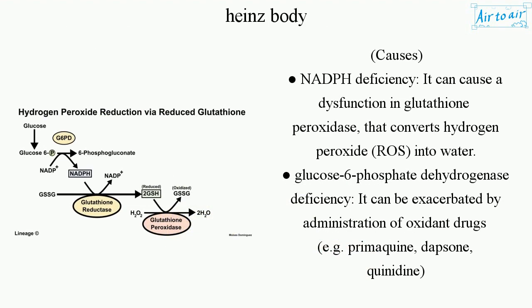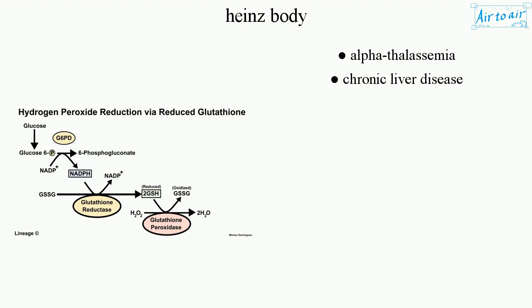Causes: NADPH deficiency — it can cause a dysfunction in glutathione peroxidase that converts hydrogen peroxide (ROS) into water. Glucose-6-phosphate dehydrogenase (G6PD) deficiency — it can be exacerbated by administration of oxidant drugs, e.g. primaquine, dapsone, quinidine. Alpha Thalassemia. Chronic Liver Disease.